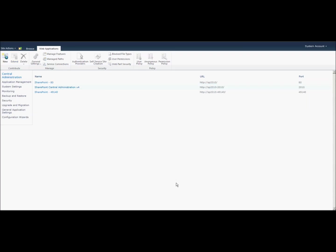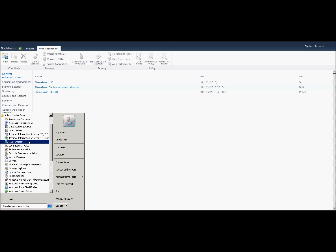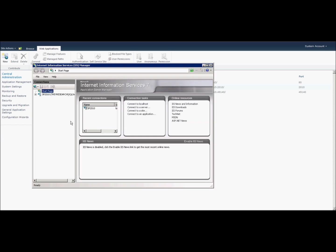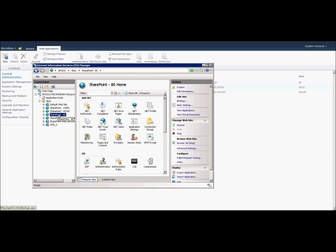If you notice, I don't have any extra sites being listed in the SharePoint web application page. However, if I go to IIS Manager and then expand the sites, I would be able to see SharePoint 13551 as well as SharePoint 80. Basically, these are two sites referencing to the same SQL back-end database.